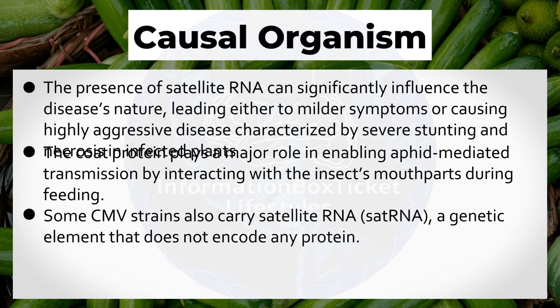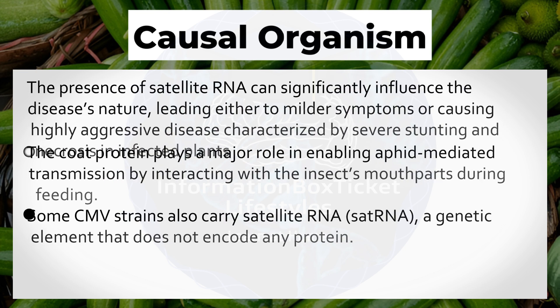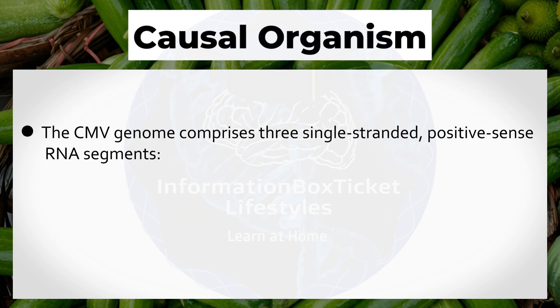Some Cucumber Mosaic Virus strains also carry satellite RNA, a genetic element that does not encode any protein. The presence of satellite RNA can significantly influence the disease's nature, leading either to milder symptoms or causing highly aggressive disease characterized by severe stunting and necrosis in infected plants.